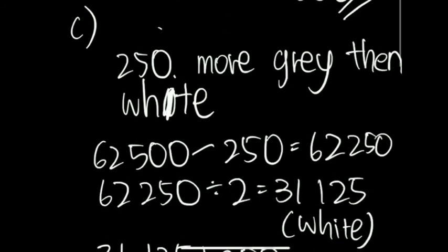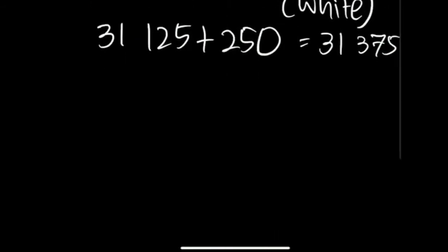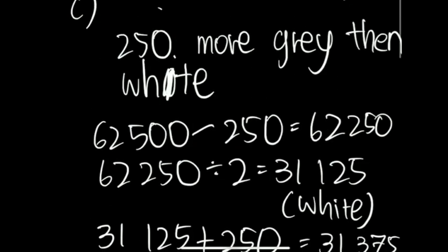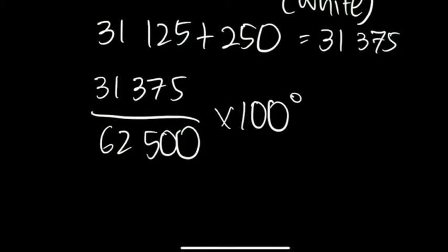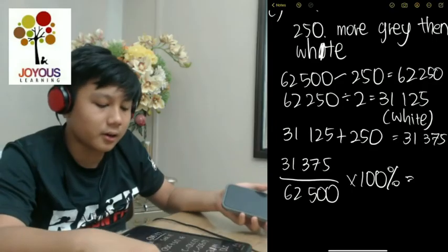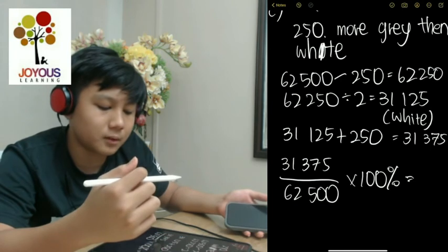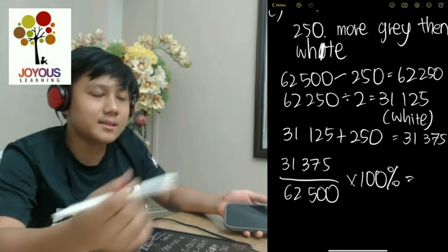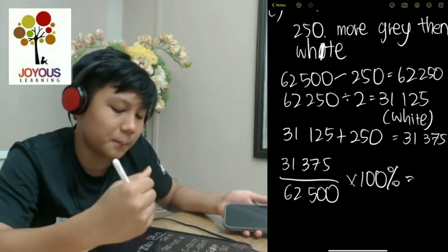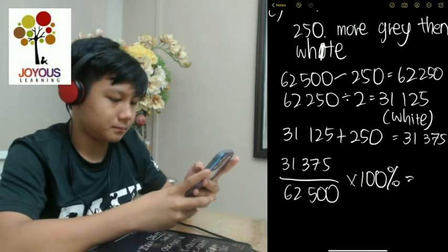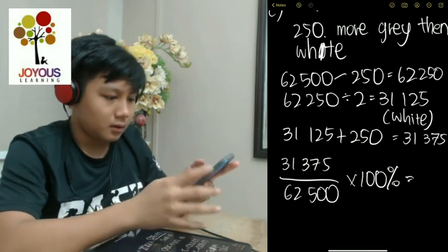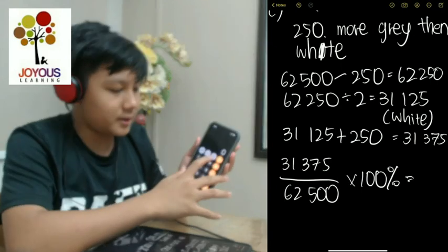Question C is to find the percentage of gray triangles. So you take the number of gray triangles, 31,375, over the total number of triangles, which is 62,500. You take it times 100%. You use a calculator. But when using a calculator and doing this type of equation, you do not type the percentage sign into the calculator. In a calculator, you do not press the percentage button.